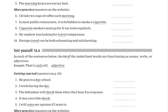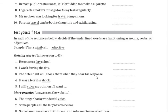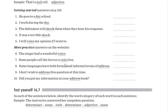Exercise 16.6 asks you to decide whether each underlined word is functioning as a noun, verb, or adjective — three possibilities. For example, 'jail cell' — identify which underlined words are adjectives. Please do the exercises yourself and don't look at the answers first. Try your best, then listen to this video again if needed.